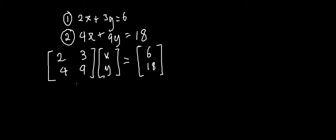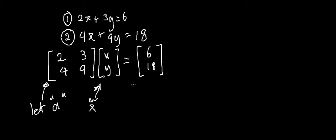In the matrix world we can't just divide this whole matrix — we have to work out its inverse. Let me show you why. So if we call this coefficient matrix A, the variable matrix x with a squiggle, and the constants matrix B...